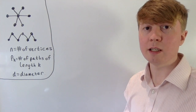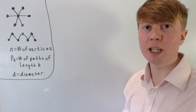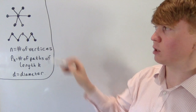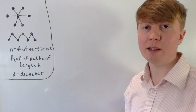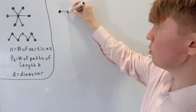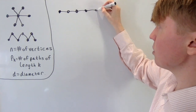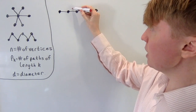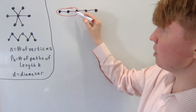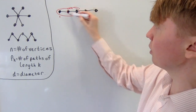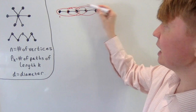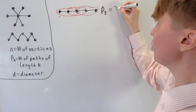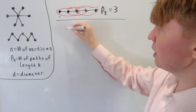The problem we're going to solve is finding which trees have more paths of length k than a linear graph. We need to calculate pk, the number of paths of length k, for a linear graph. Starting with a simple example where n is 5 and we're interested in paths of length 2: we can count them all — sliding the starting point along gives us 3 paths of length 2.